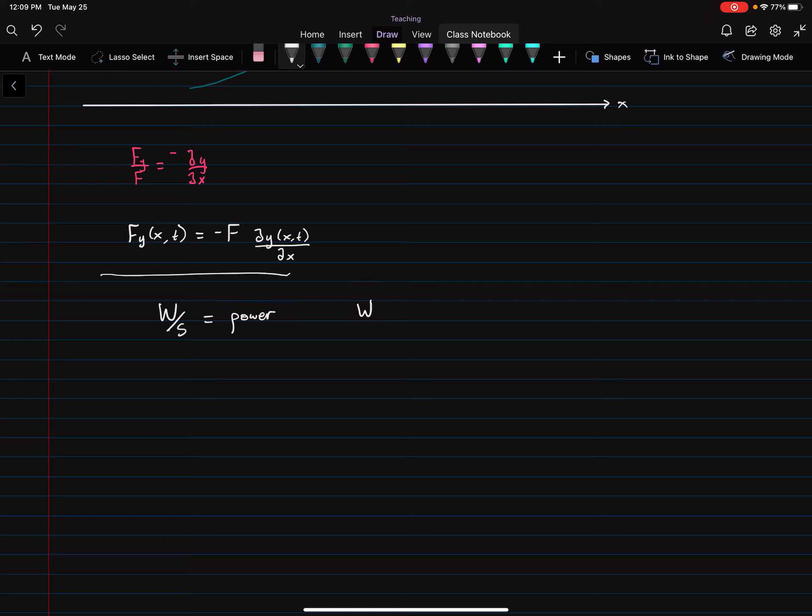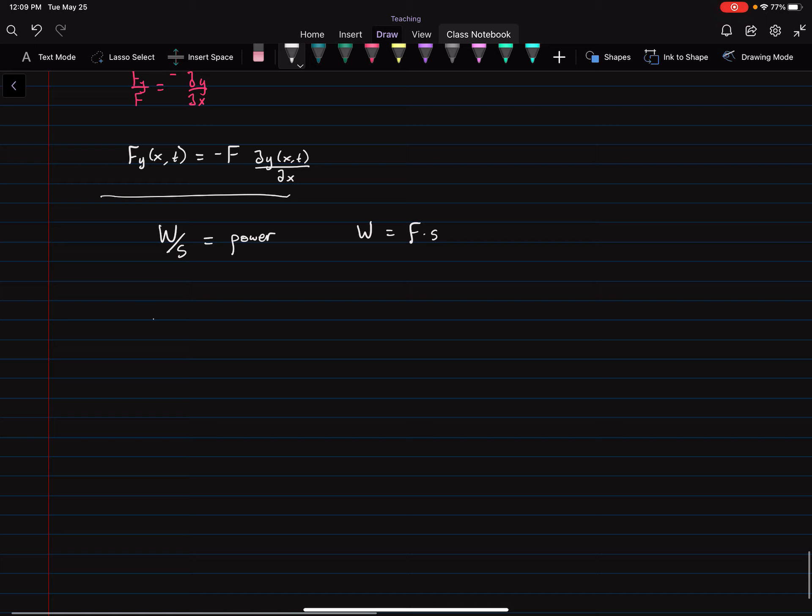And work is force through a displacement. So therefore, we can write power as a function of X and T in this case. We can write it as Fy as a function of X and T times Vy as a function of X and T.